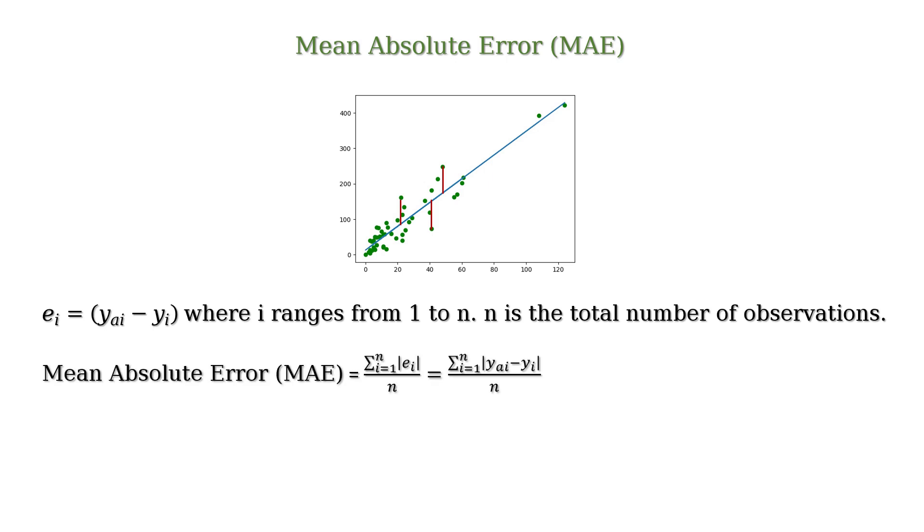The mean absolute error is defined as MAE is equal to summation from i equals 1 to n of absolute value of ei divided by n. That is equal to summation from i equals 1 to n of absolute value of yai minus yi divided by n.